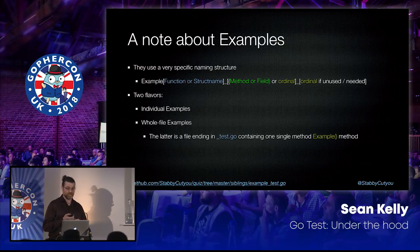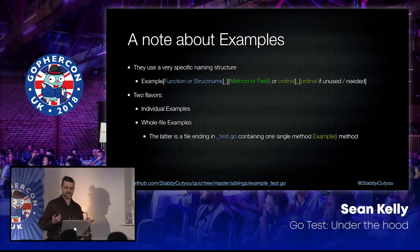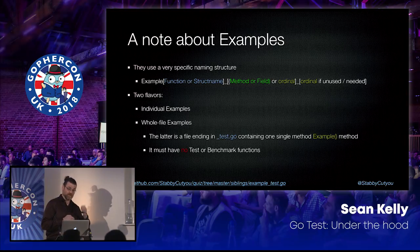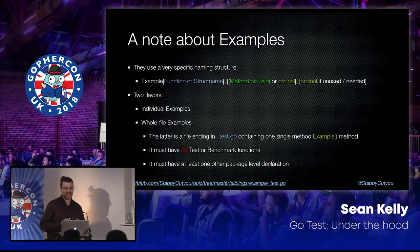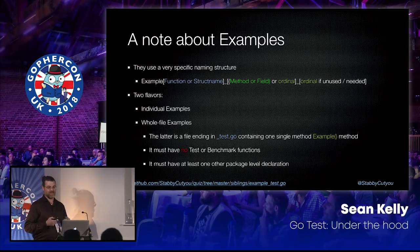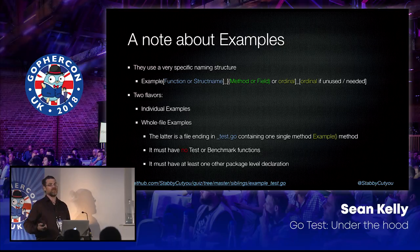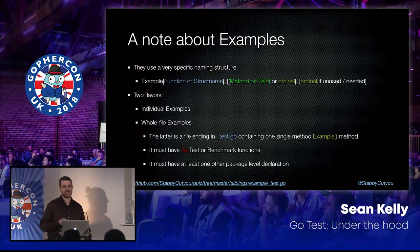Whole file examples are special. It has to be an underscore test.go file, it can only have one single example function in that file, there can also be no test or benchmark functions in that file, and it has to have at least one other package-level declaration - a struct or function or something that you're trying to decorate with an example. Otherwise it isn't considered a whole file example.